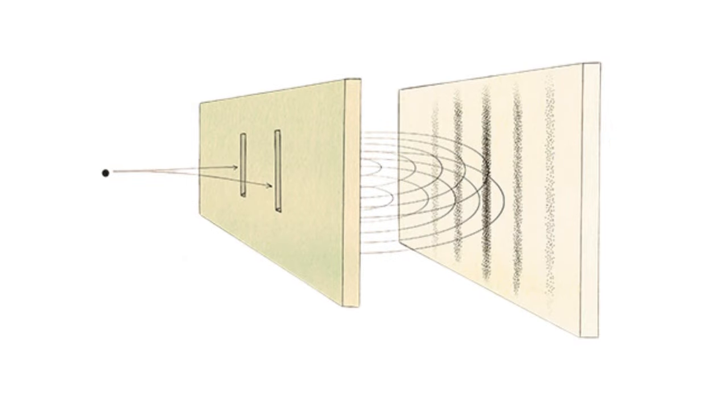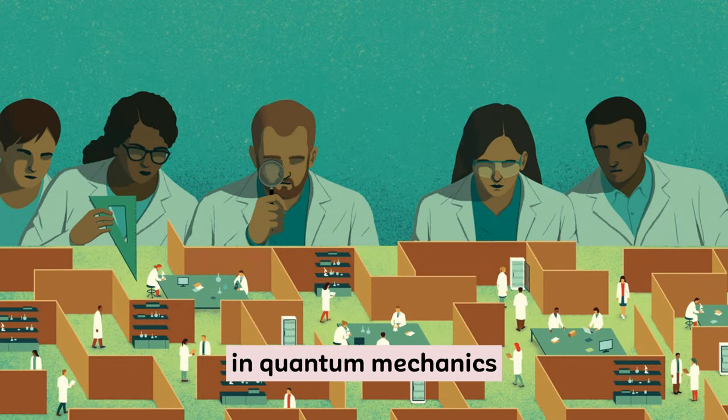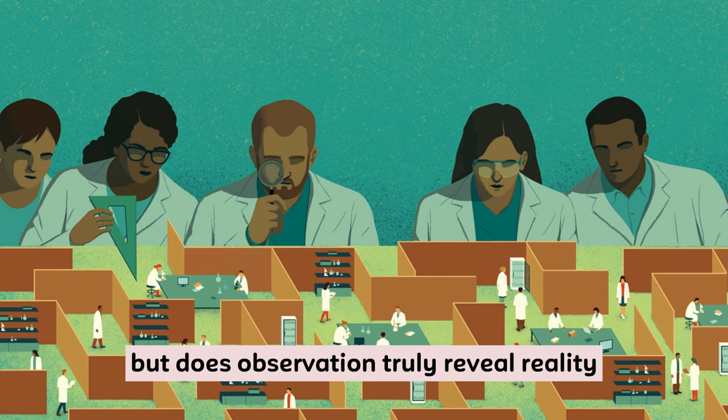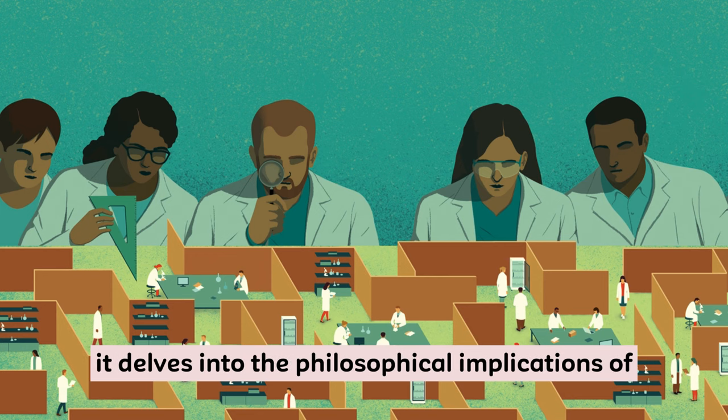10. Observer Paradox. In quantum mechanics, observation affects the outcome of experiments, but does observation truly reveal reality? It delves into the philosophical implications of measurement.